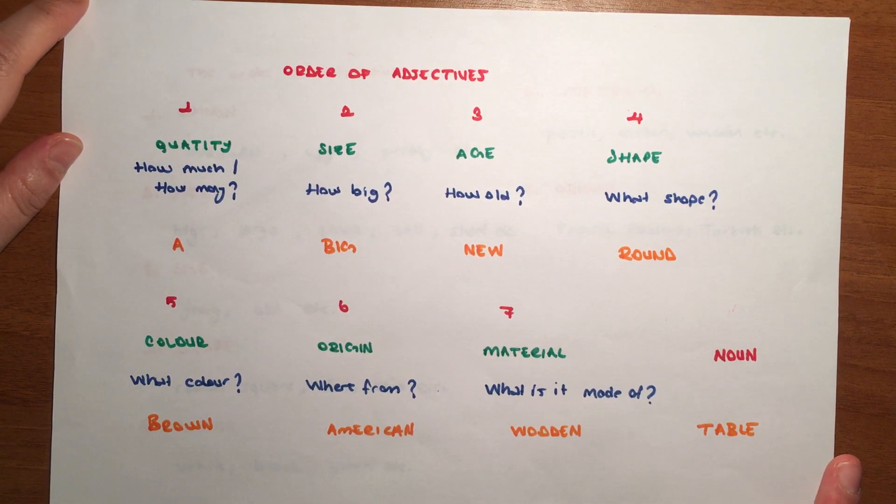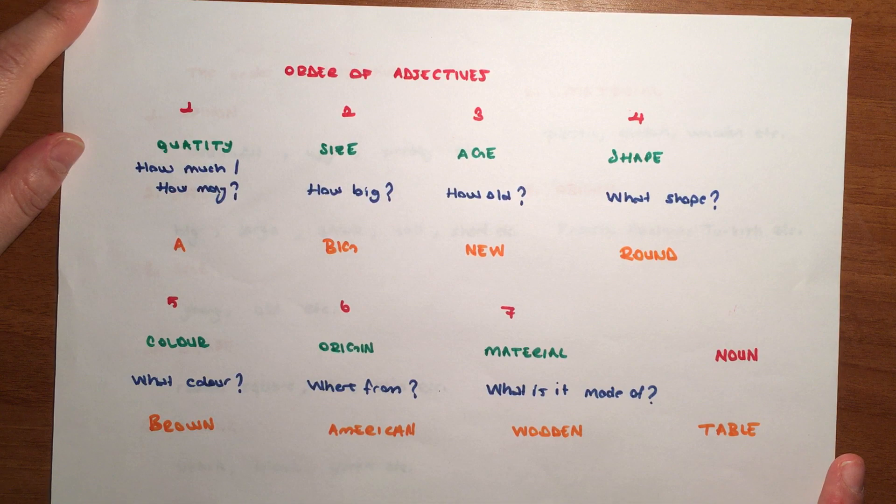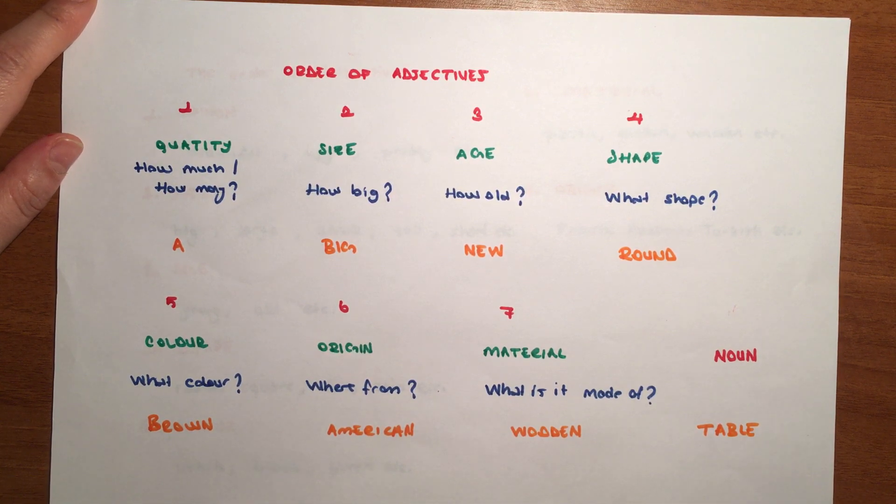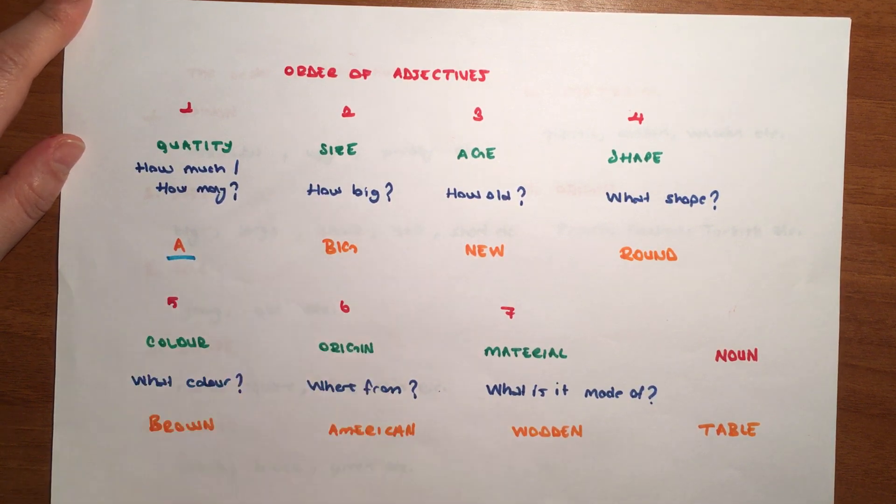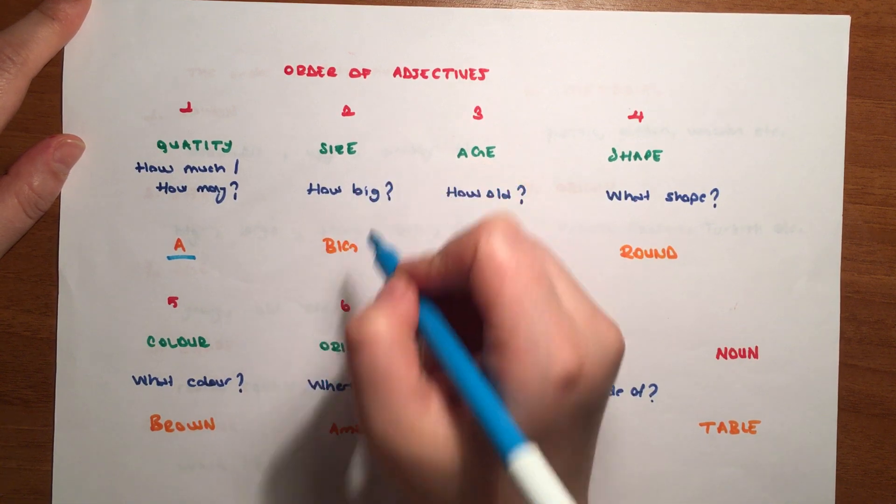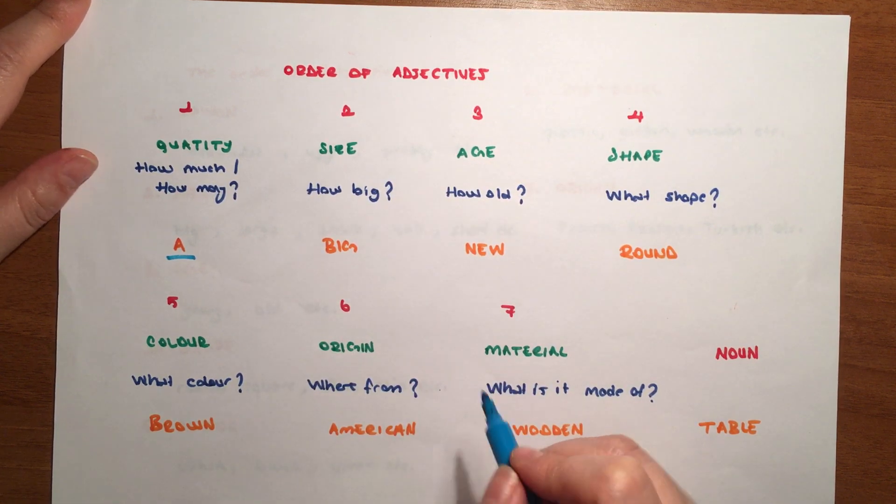In English we do these in order. First, which one do we prefer? Quantity. First, quantity is preferred - how much, how many. Then we use size - how big, talking about its size. We said big as an example. Age - how old, we're asking about age.